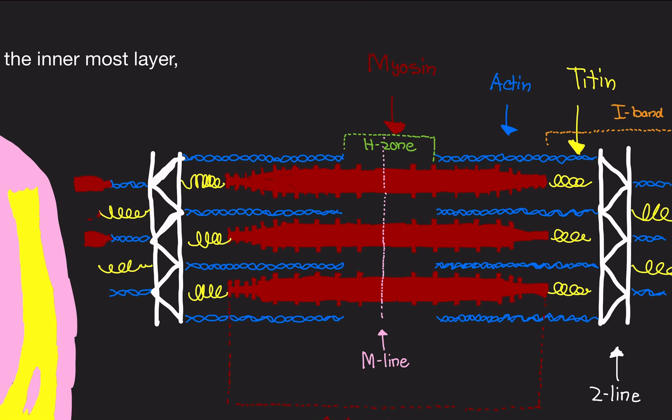These are what does the contracting of the muscle. So whenever you flex your bicep or you move your abs or you're at the gym working out, it's the interaction between these two filaments that causes the contraction.